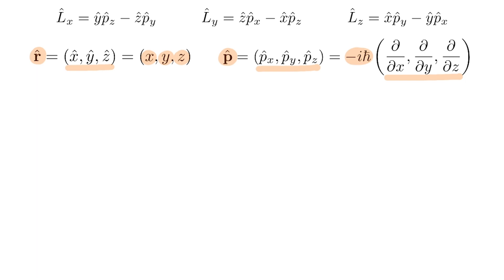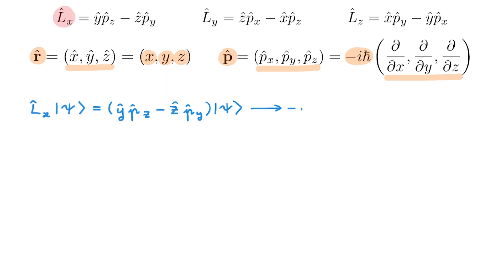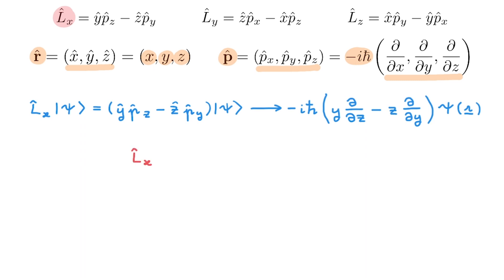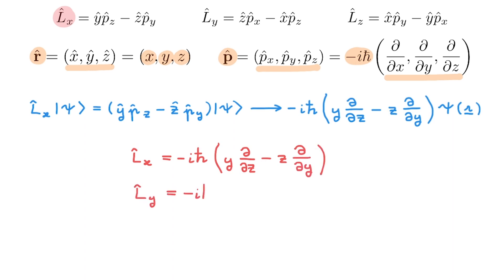So what does this imply for the angular momentum? Let's start with Lx and consider its action on a state psi. From the expression above, we know that this is equal to ypz minus zpy acting on psi. Using the expressions of the position and momentum operators in the position representation, we get minus i h-bar times (y times the partial derivative with respect to z, minus z times the partial derivative with respect to y), all acting on the wave function psi(r). This means we can write the operator Lx in the position basis as this differential operator. We can do the exact same thing for Ly and also for Lz.